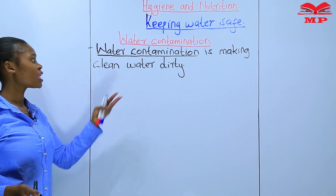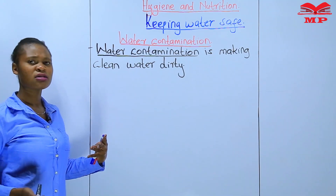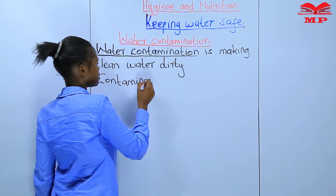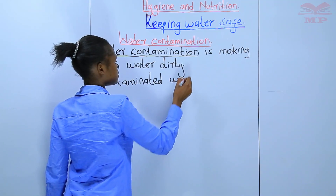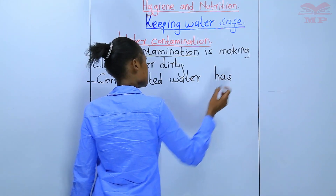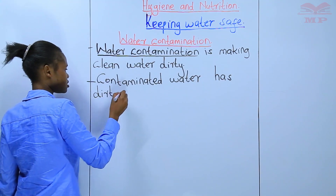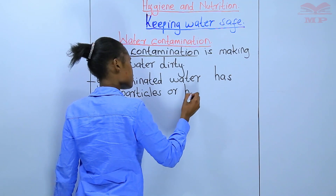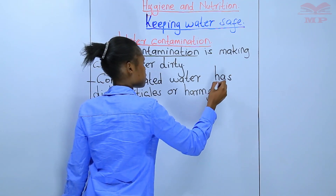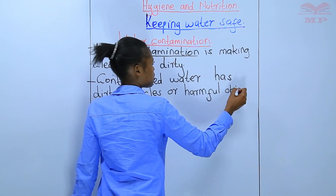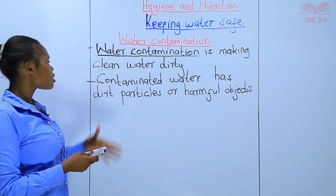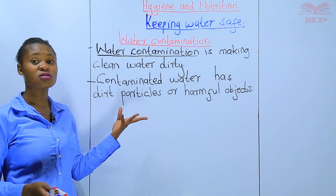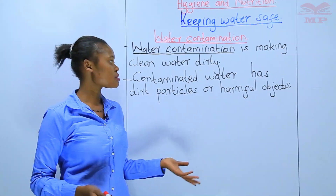Water contamination is making clean water dirty. Now, how does contaminated water look like? Contaminated water has dirt particles. Those particles are harmful objects. So contaminated water has dirt particles or harmful objects. Dirt particles can be particles of soil or stones.